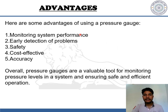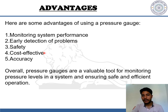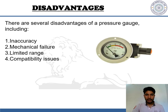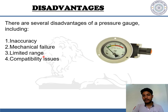The advantages of using a pressure gauge include monitoring system performance, early detection of problems, safety, cost-effectiveness, and accuracy. Overall, pressure gauges are a valuable tool for monitoring pressure levels and ensuring safe and efficient operation. Disadvantages may include inaccuracies at certain times, mechanical failure of equipment, limited range of the gauge, or compatibility issues.